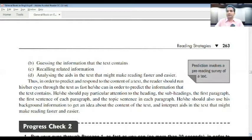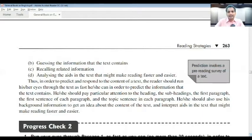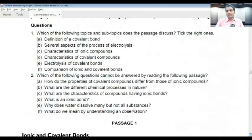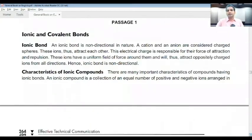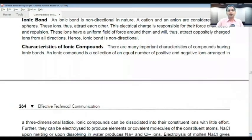The topic sentence in each paragraph also provides key information. The reader should also use background information to get an idea about the content of the text and interpret aids in the text that might make reading faster and easier. With these prediction techniques, we have covered certain important best reading strategies.